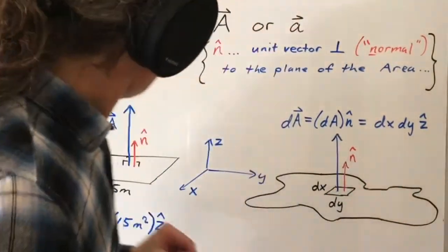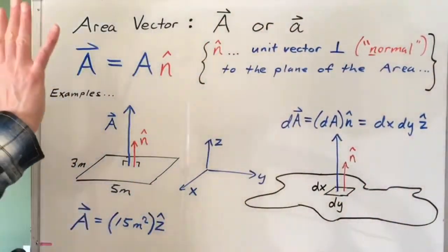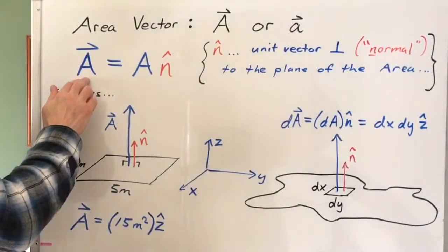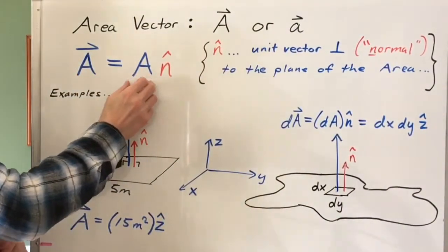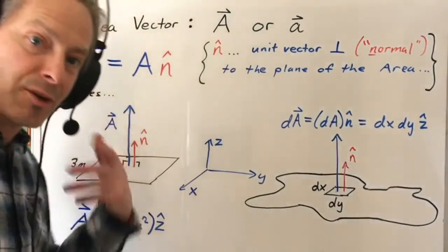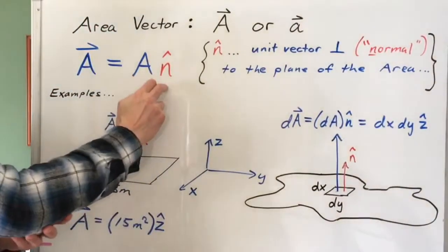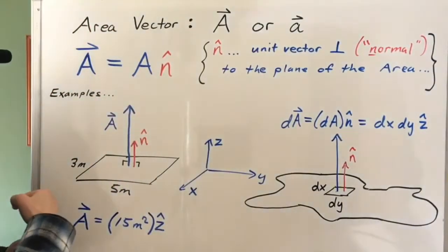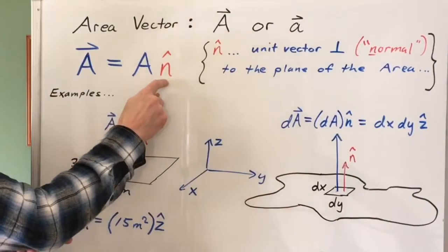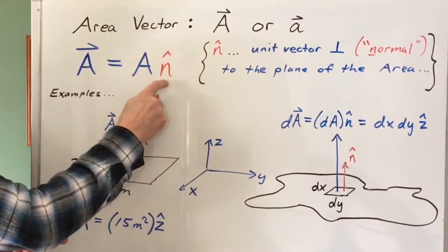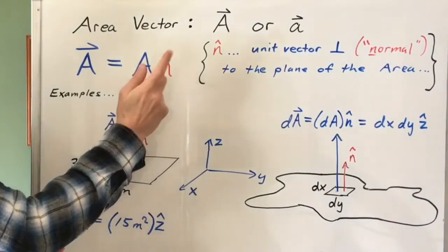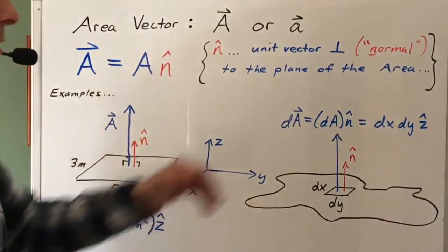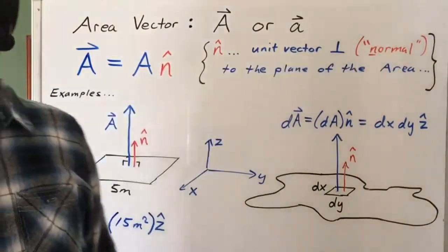Generally speaking, an area vector consists of a magnitude — which is what we normally think of as the area — and the direction perpendicular to the plane of the area. This n-hat represents a normal unit vector, just an abbreviation for it. Normal is another word for perpendicular.